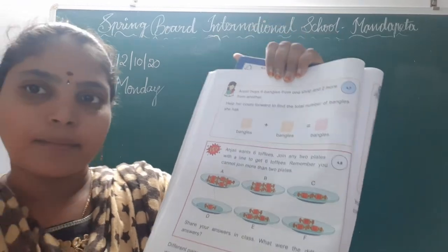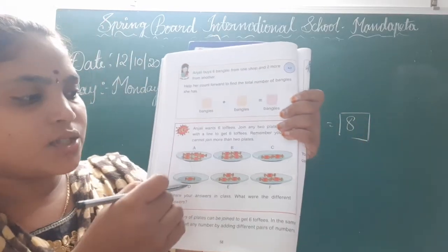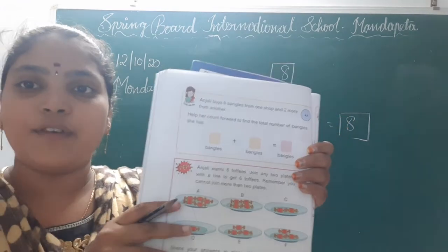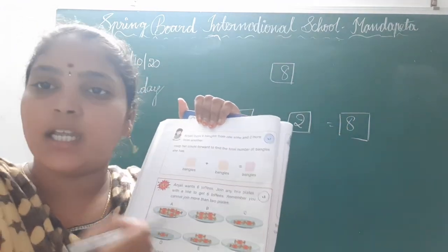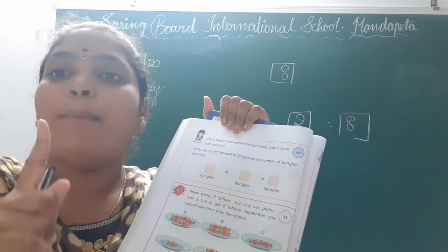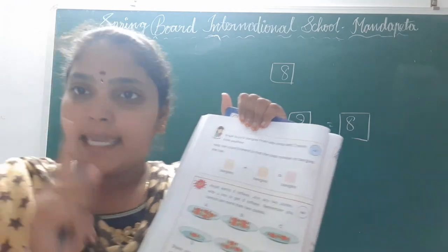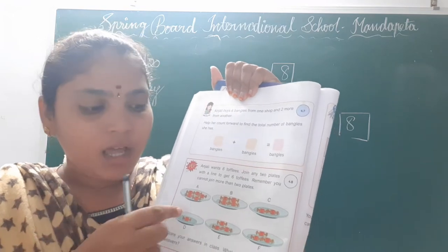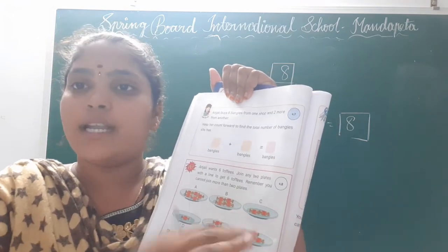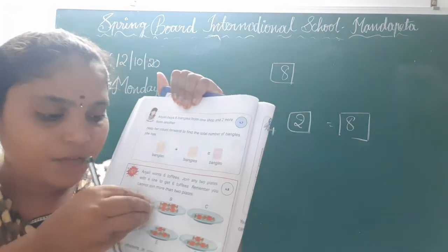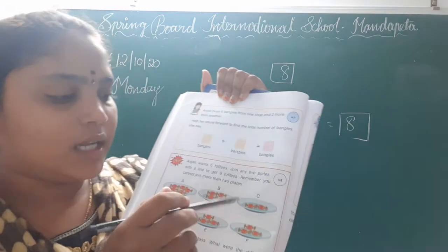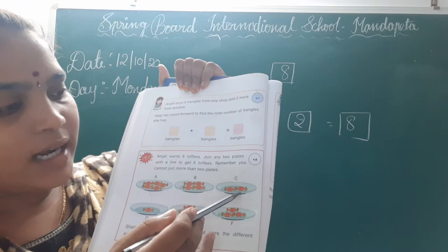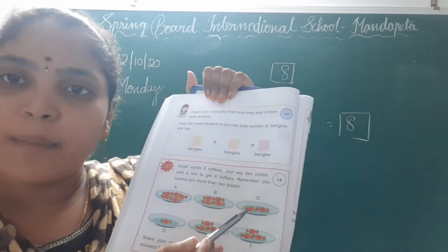Is that right, children? If you join these 2 plates to get the total of 6 toffees only. You have to check. But you have to join any 2 plates with total number of toffees as 6 only. So: 1, 2, 3, 4 — here 4 chocolates and here 2. 4 plus 2 is 6.